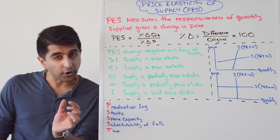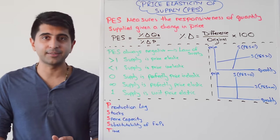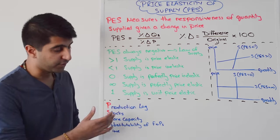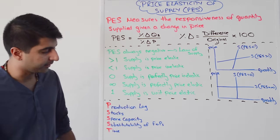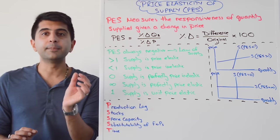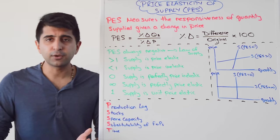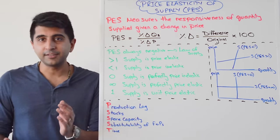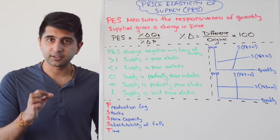The first S stands for stocks. The larger the level of stocks, the more price elastic supply is going to be — it's easy to respond to an increase in price or demand if you've got lots of stocks. The lower your level of stocks, the more price inelastic supply will be. The second S stands for spare capacity. The more spare capacity a business has, the more price elastic supply will be, because you can utilize that capacity when price or demand increases. If spare capacity is low, supply is price inelastic.